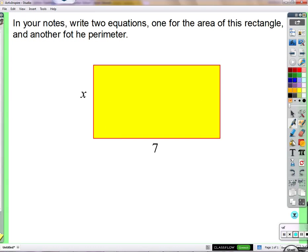Okay, I've got a chance to look at a few of you and your work, and it looked pretty good, but let's go over it together. All right, we've got this rectangle, and I asked you to find two equations with the area and the perimeter.